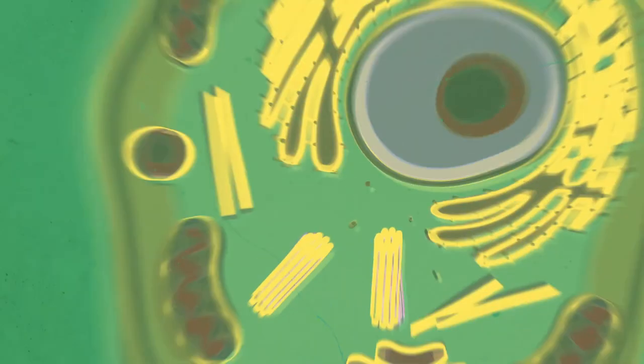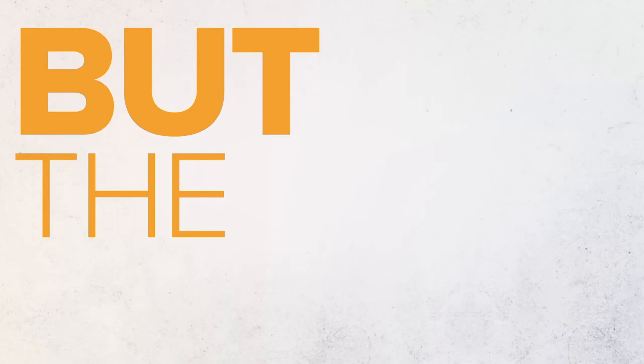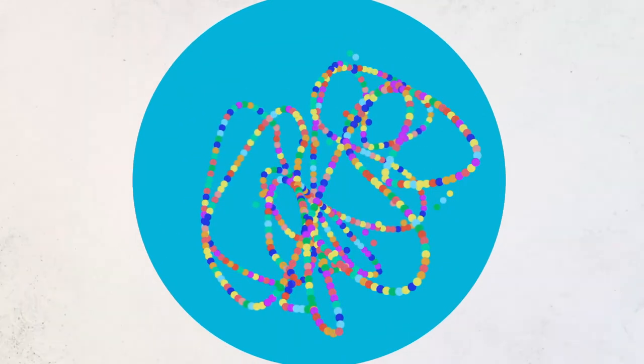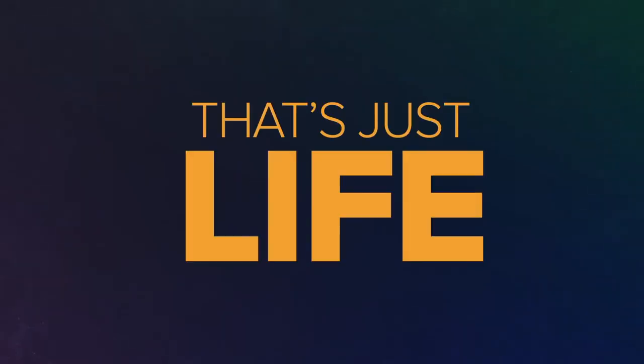And you need roughly 300 to form the simplest living cell we know of. But the point is this. You can't get a protein, you can't get a cell, and you can't get a life. That's just, well, life.